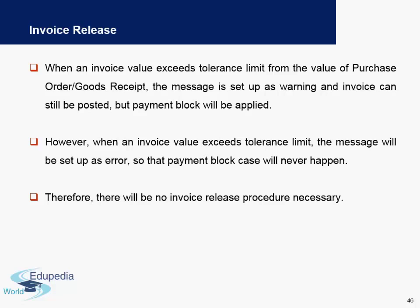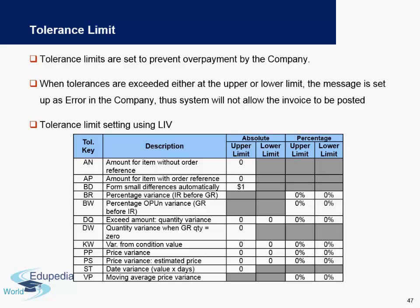Therefore, there is no requirement for an invoice release process when the error is triggered. An invoice release process is only used when a payment block is applied to an invoice. Tolerance limits are set up to prevent overpayment by the company. For example, a threshold of one percent or an absolute figure like five dollars can be configured. When tolerances are exceeded or at the upper or lower limit, a message is set as an error and the invoice cannot be posted. Below is an example of different tolerance keys, their descriptions, and both absolute and percentage limits set for every key.